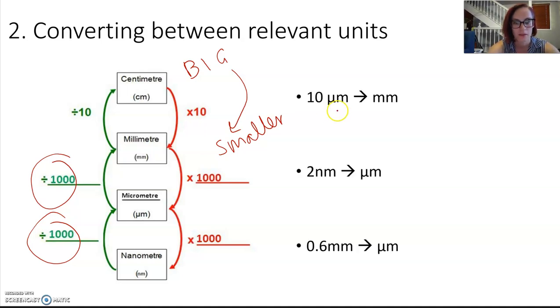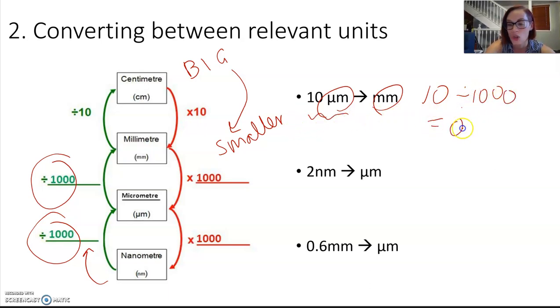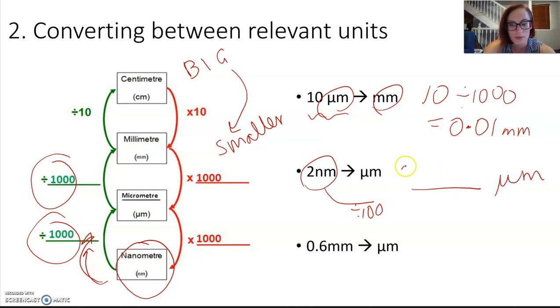If we tried them out, we're going from a unit that is smaller to one that is bigger, so we are going to need to divide there. So it will be 10 divided by the 1000, knowing that we have 1000 micrometres in the millimetre, which is obviously going to give us 0.01 millimetres. We have 2 nanometres. Once again, we are going from a smaller to a bigger unit, so we are going to divide by 1000, and we are going to end up with 0.002 micrometres. This time we are going from millimetres to a smaller unit, so we are going to need to multiply. There are 1000 micrometres in the millimetre, so we are multiplying by 1000, and therefore we are going to end up with 600. That makes sense. 600 micrometres.